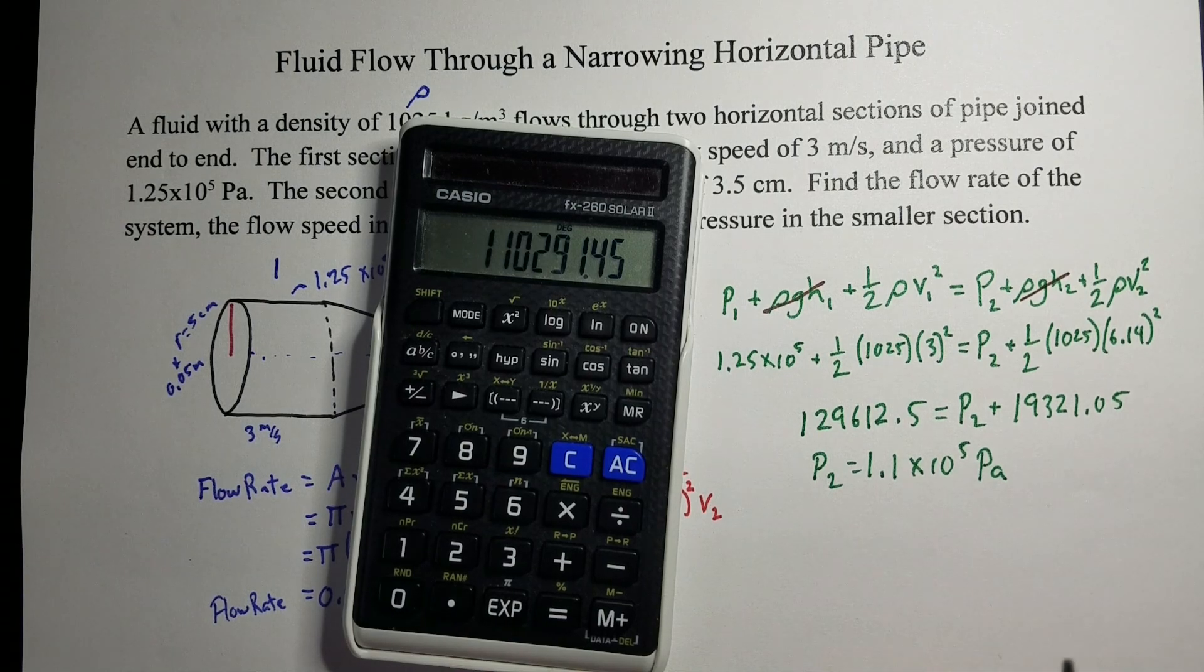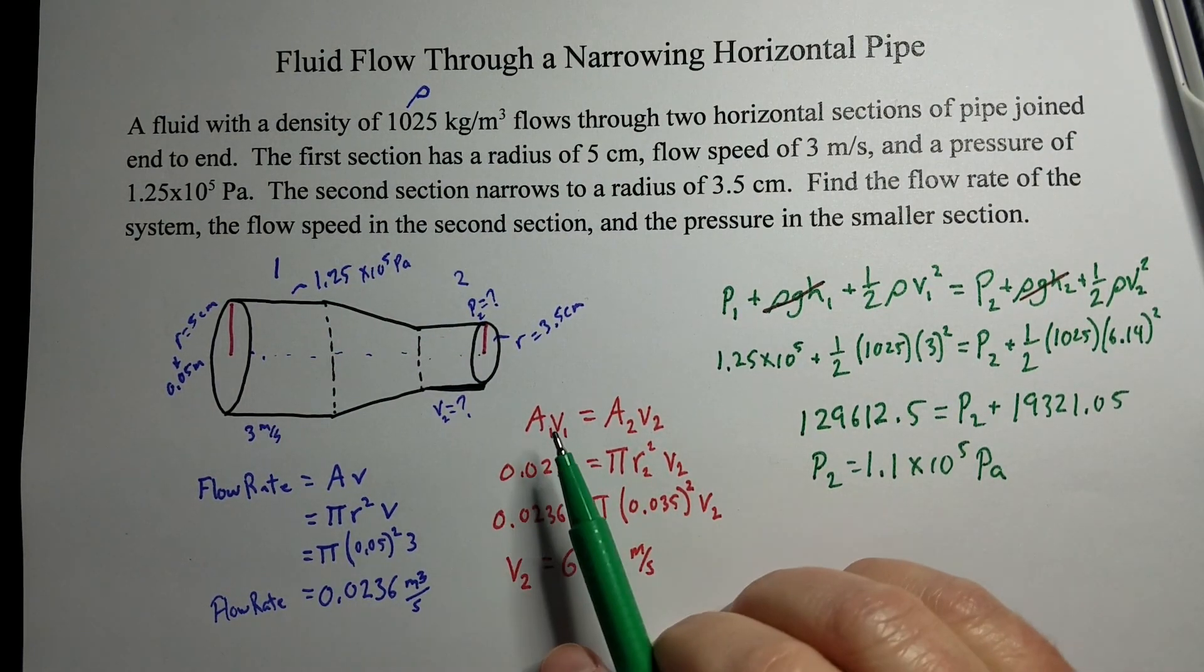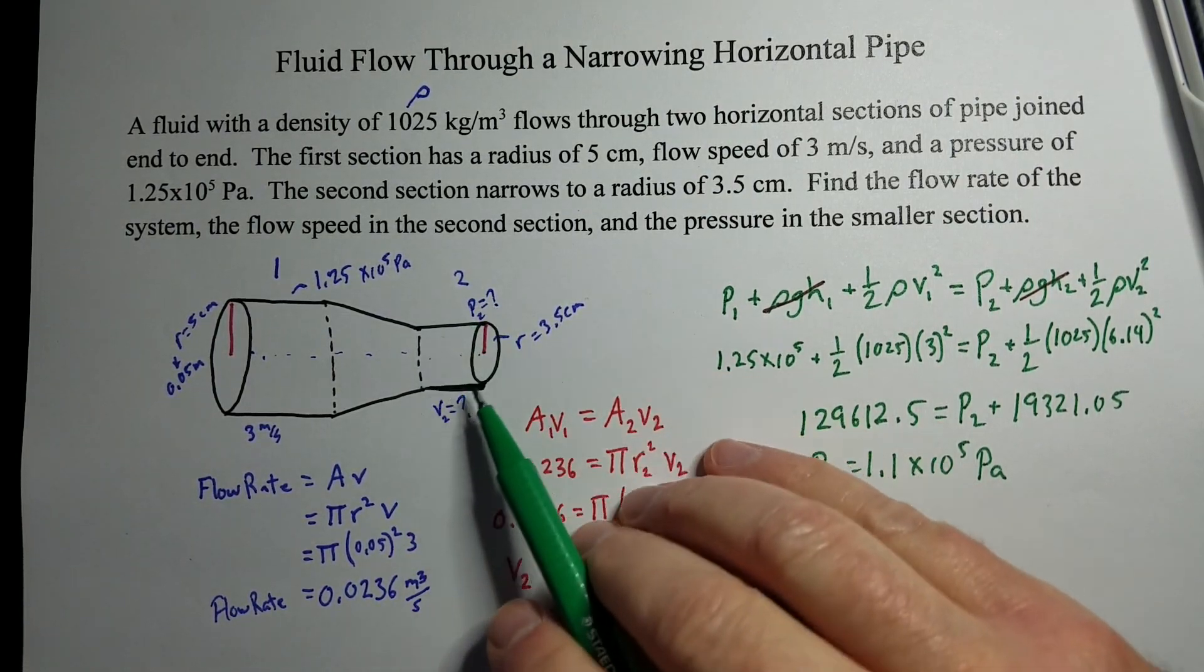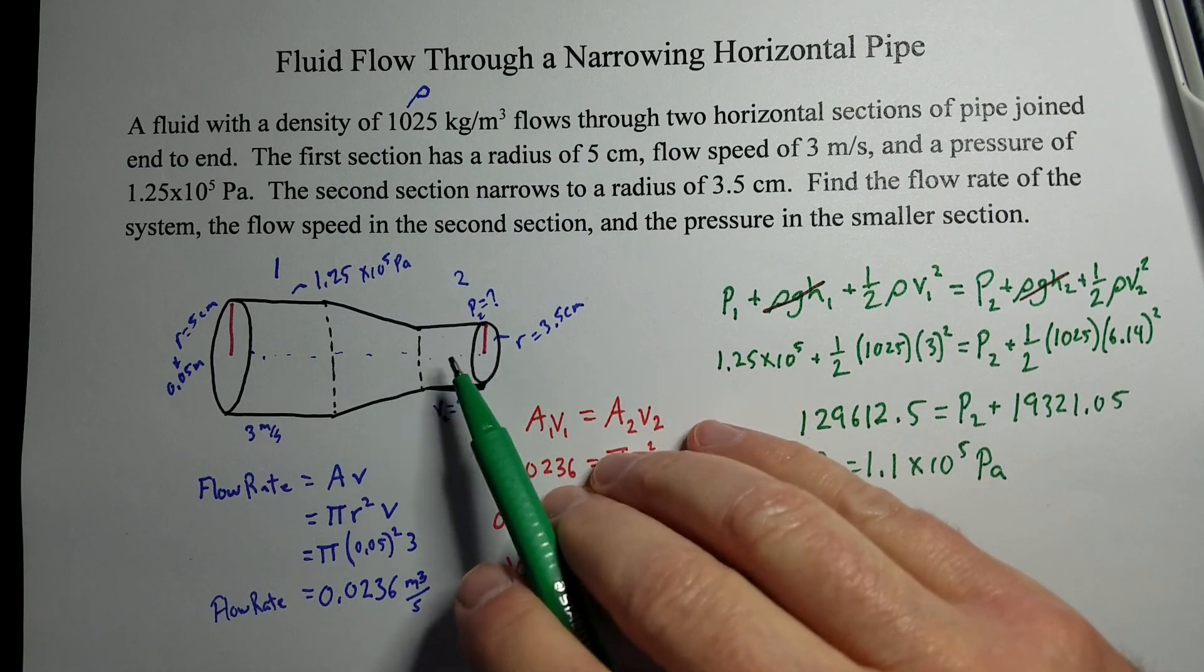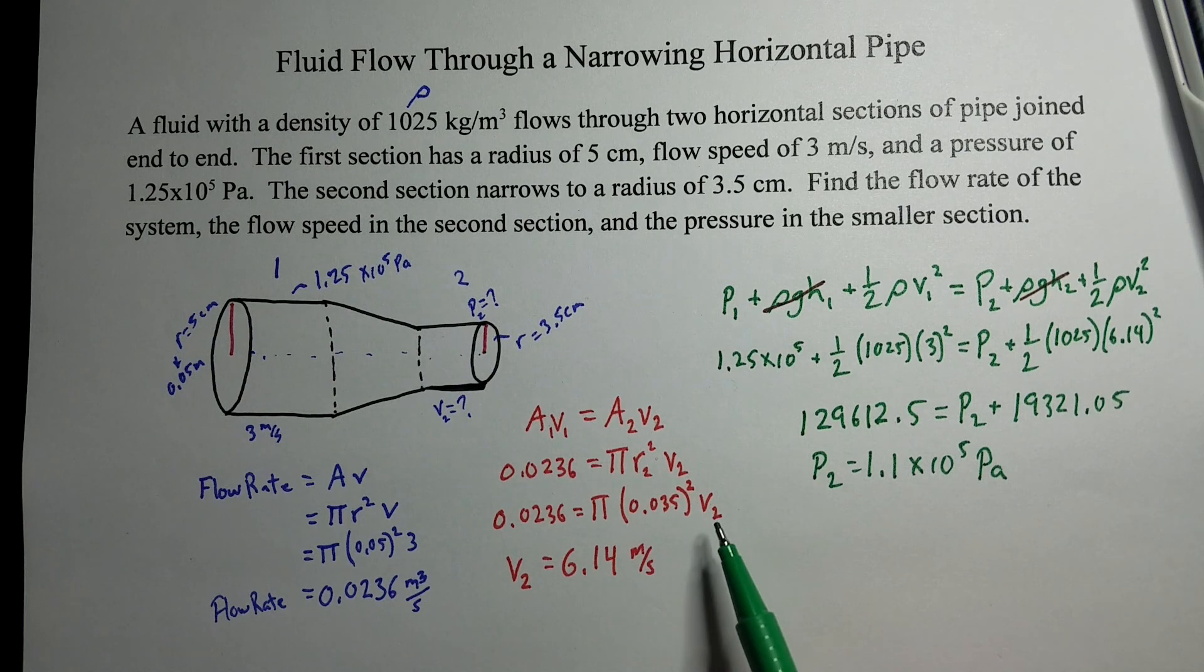So, it makes sense. The fluid's traveling faster, so the pressure exerted on the environment around it should be less, and we did find it to be less than what we originally started off with.